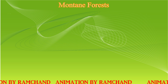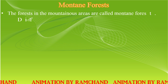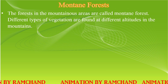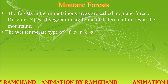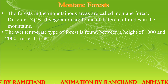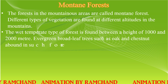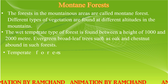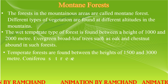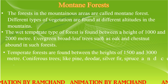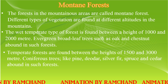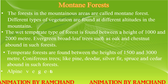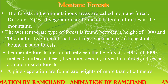Forests in mountainous areas are called montane forests. Different types of vegetation are found at different altitudes. Wet temperate forests with evergreen broadleaf trees such as oak and chestnut are found between 1,000 and 2,000 meters. Temperate forests with coniferous trees like pine, deodar, silver fir, spruce, and cedar are found between 1,500 and 3,000 meters. Alpine vegetation is found at heights above 3,600 meters.